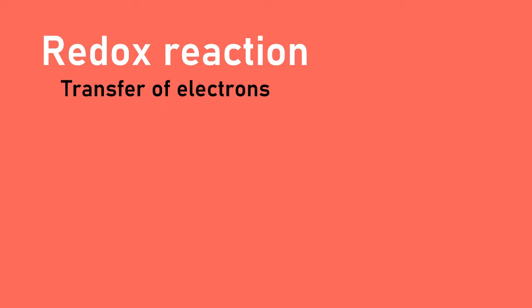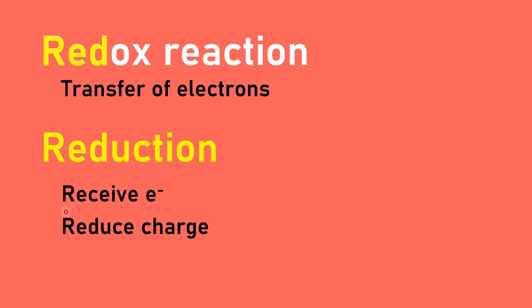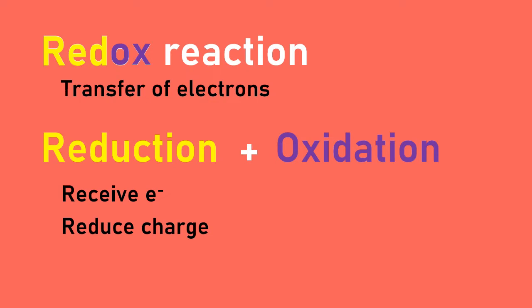In studying electrochemistry, we need to understand the redox reaction. A redox reaction involves the transfer of electrons between two substances. It combines reduction — where a substance receives electrons and its oxidation number decreases — and oxidation — where a substance loses electrons and its charge or oxidation number increases.